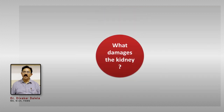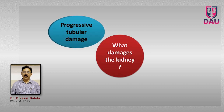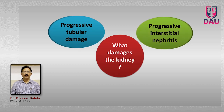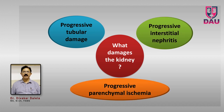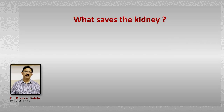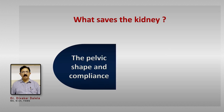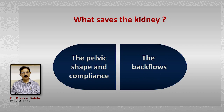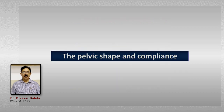So to summarize, what damages the kidney: progressive tubular damage, progressive interstitial nephritis, and progressive parenchymal ischemia — these three events are going on all the time in that kidney and they are all interrelated. Now let's look at the second aspect: what saves the kidney? The pelvic shape and compliance, and the backflows, are the protective factors.